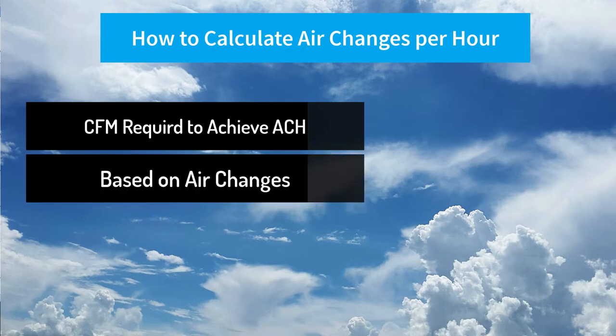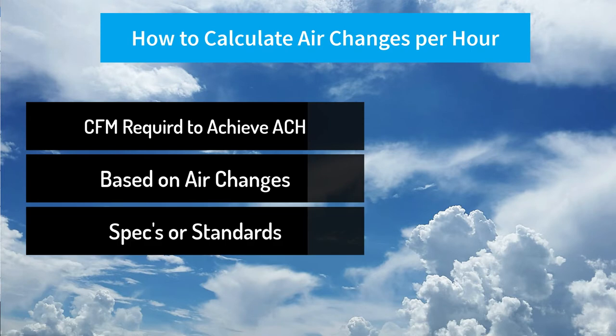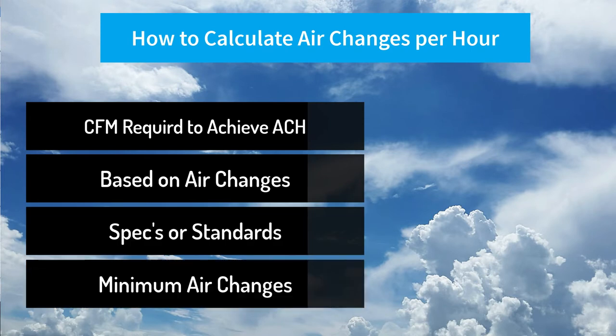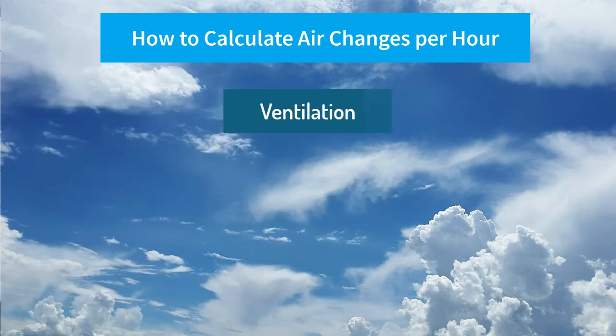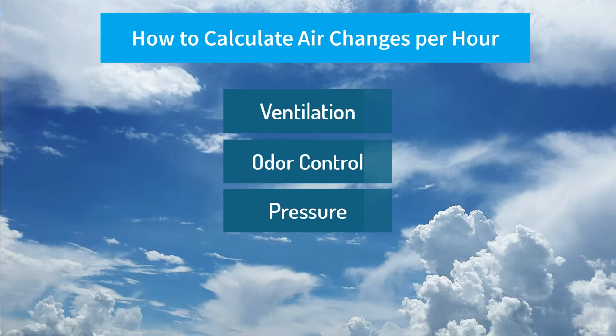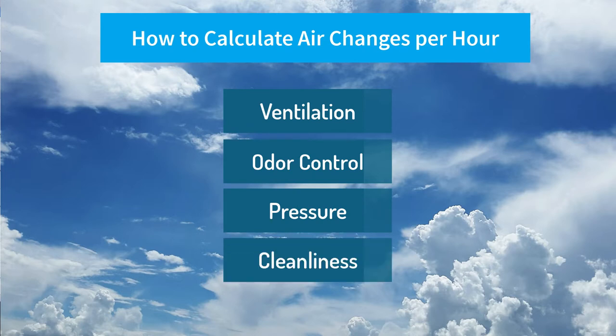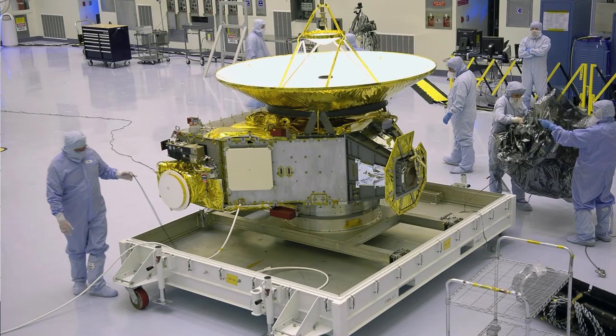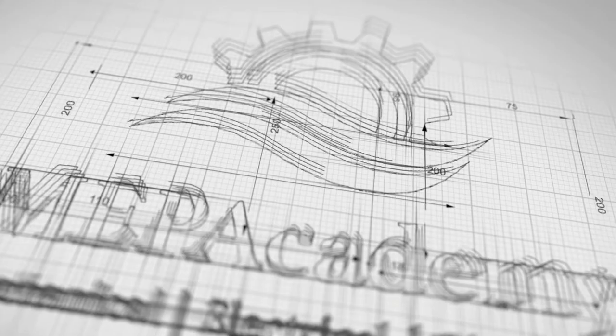Often specifications or standards will mandate a minimum air change per hour for a room for ventilation purposes, odor control, pressure relationship between spaces, or to achieve a cleanliness level like in a clean room or operating room.